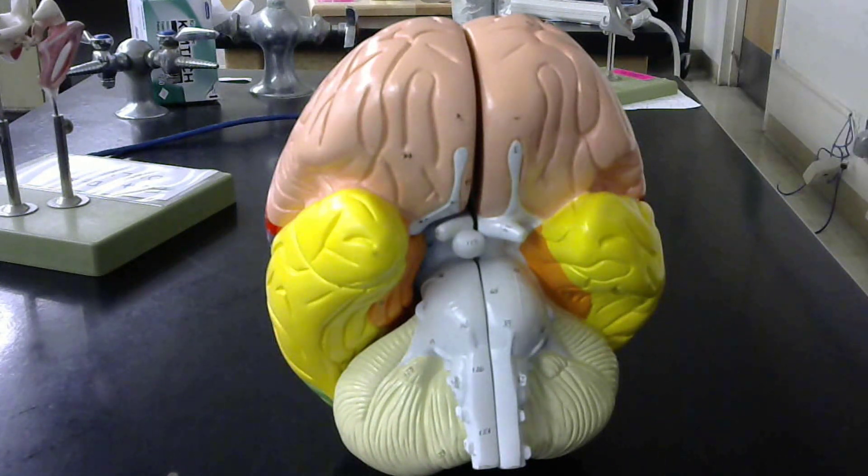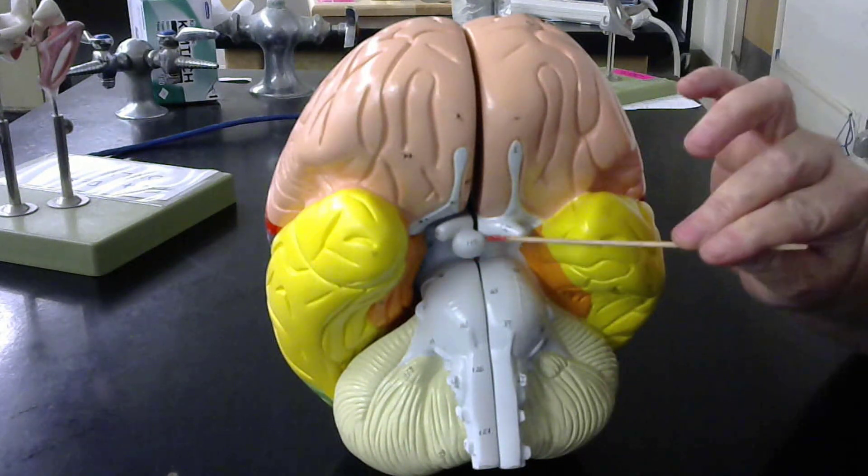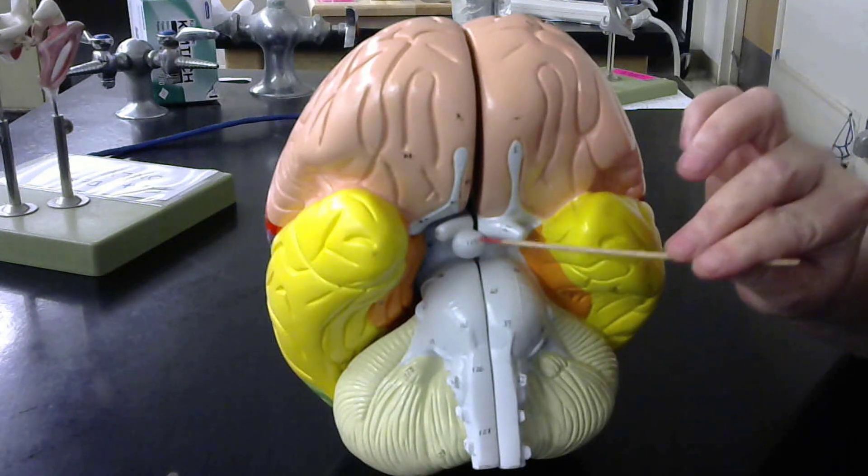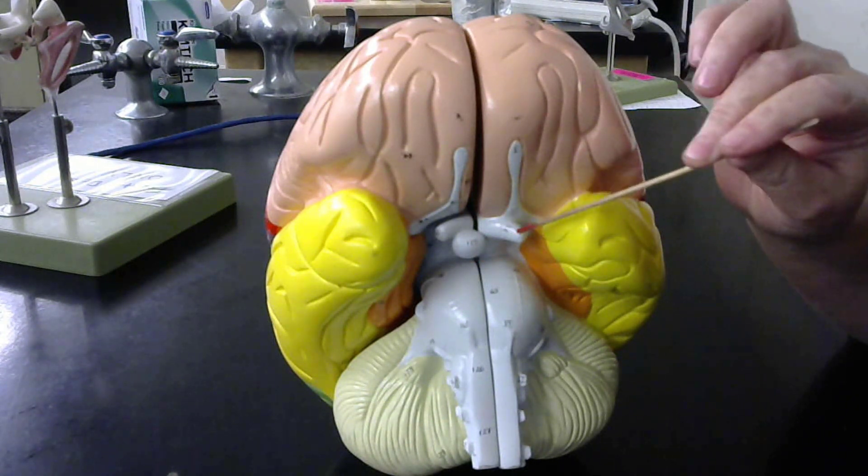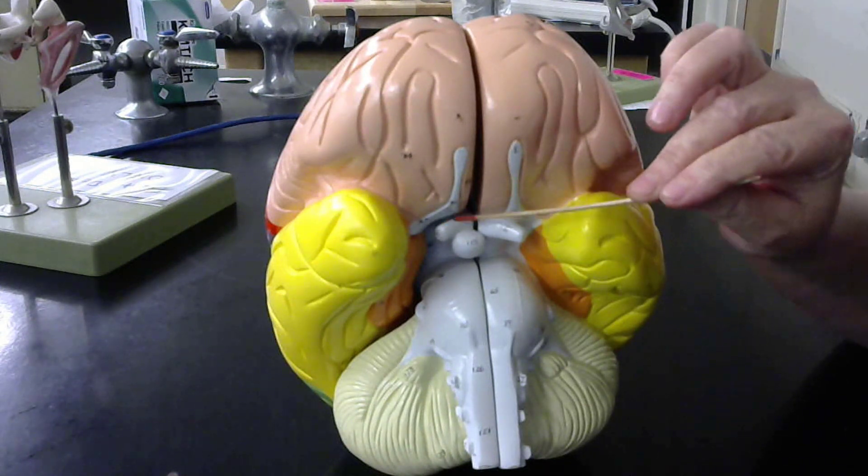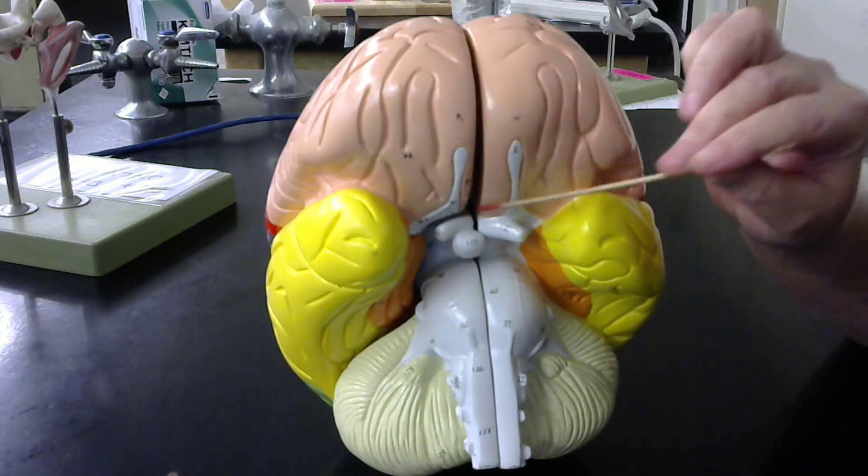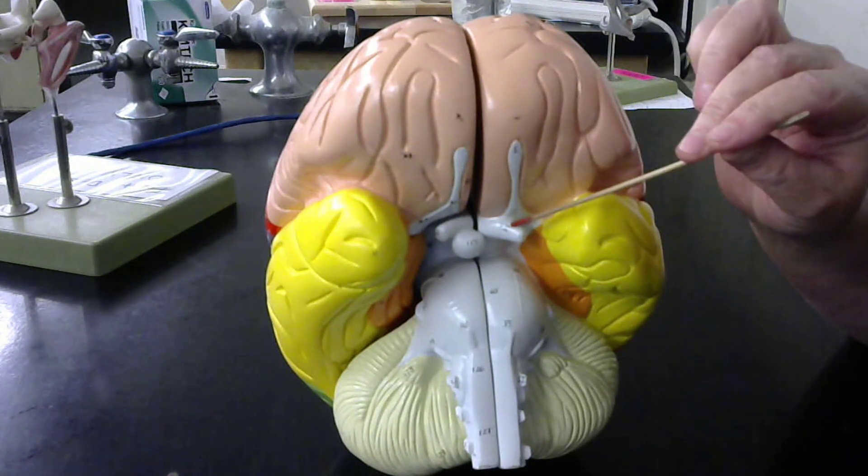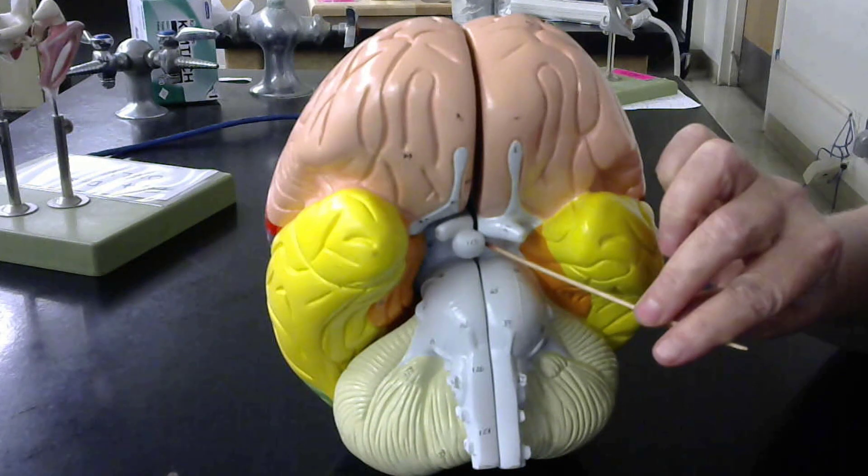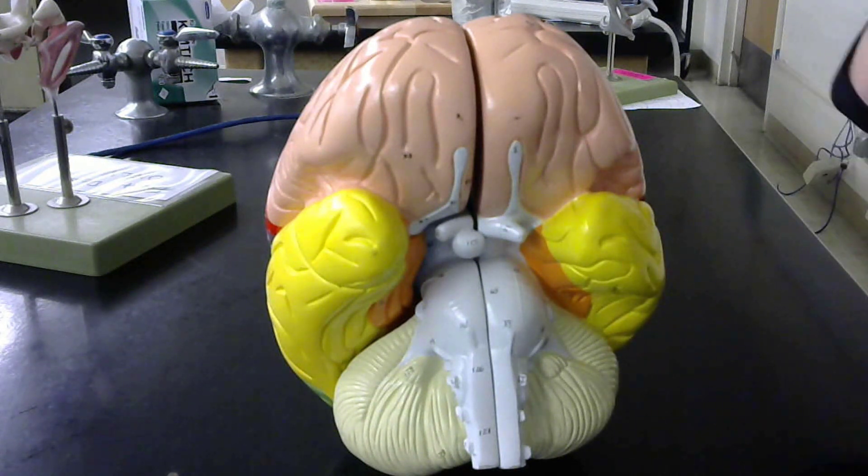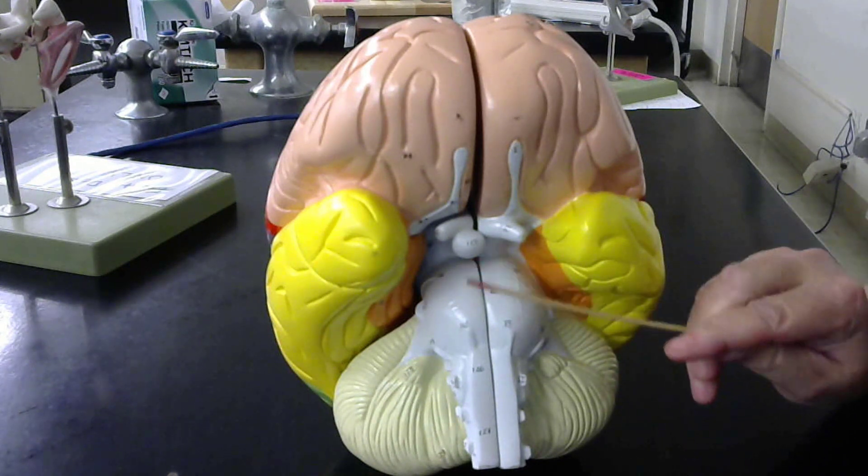Here this is the pituitary gland, and we have cranial nerve number two coming off here. This is the optic nerve, and these optic nerves cross at a point that we call the optic chiasm.